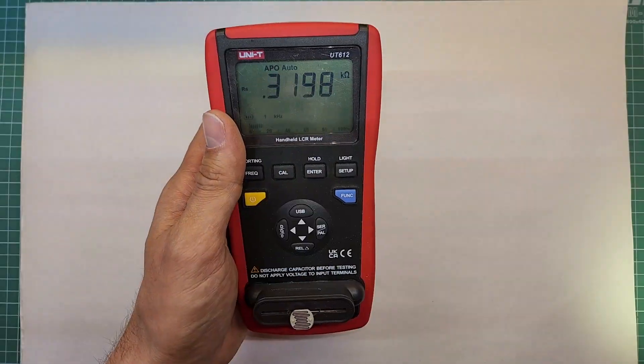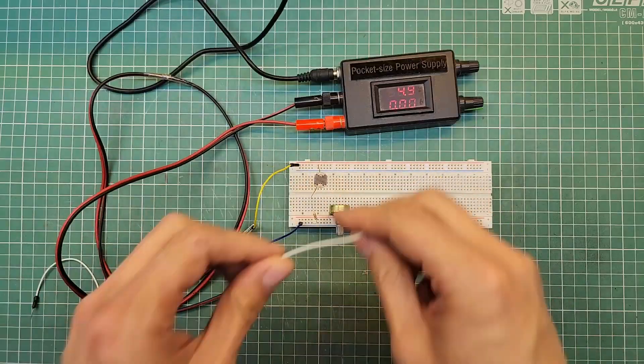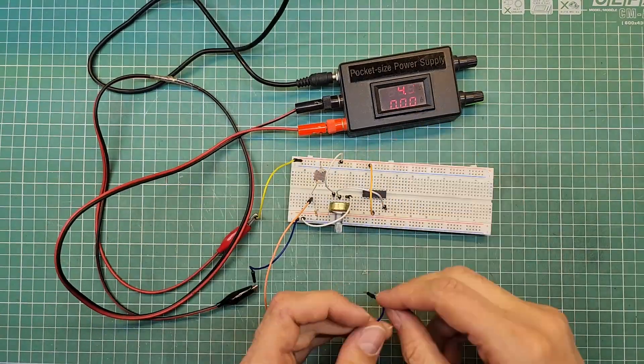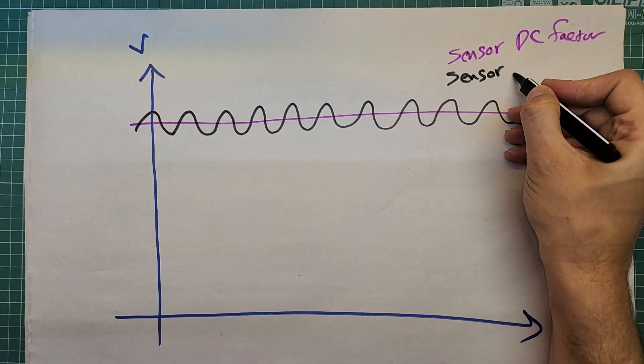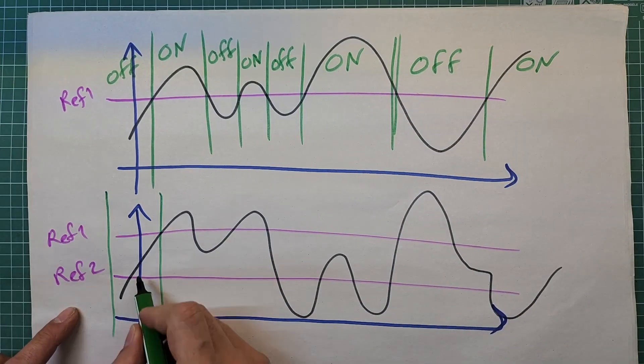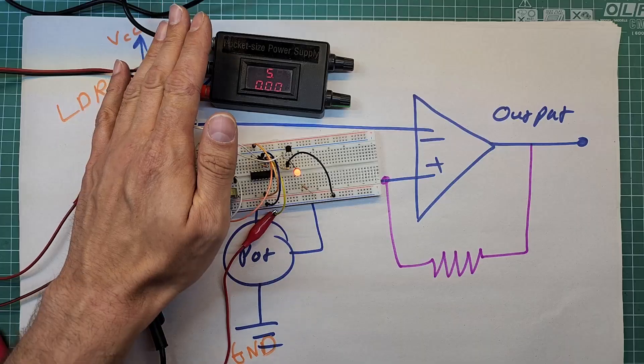Schmitt Trigger — a beautiful technique and a powerful tool which is very simple to implement. It employs a mysterious concept called hysteresis. Does the term hysteresis sound intimidating? If you are diving into electronics, complex concepts can sometimes feel overwhelming, but don't worry — I am here to make it simple and fun. Join me to break down this complex concept into bite-sized, easy-to-understand pieces using a practical example. By the end of this video, you will see that Schmitt Trigger and hysteresis aren't as scary as they sound.